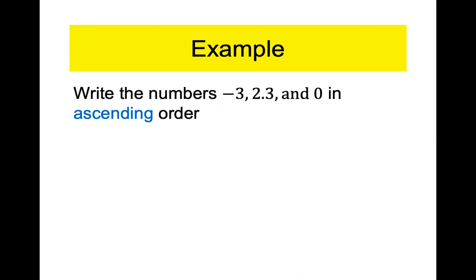Same idea, different question: write these numbers in ascending order. Be careful — you're going to get this wrong if you don't pay attention. When I said to write things from least to greatest, some of you didn't know what that meant. Ascending means going up: I'm ascending the staircase. So I need to go from least to greatest. What's the smallest number here? By definition, negatives are smaller than positives, and there's only one negative — so negative three is the smallest. Then comes zero. Be careful with the negatives: as the numbers get bigger, the values decrease.